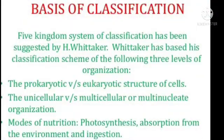Basis of Classification — Five Kingdoms. The Five Kingdoms System of Classification has been suggested by H. Whittaker. Whittaker based his classification scheme on the following three levels of organization: the prokaryotic versus eukaryotic structure of cells, the unicellular versus multicellular or multinucleate organization, and modes of nutrition — photosynthesis, absorption from the environment, and ingestion.